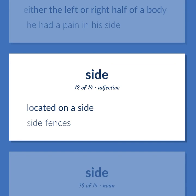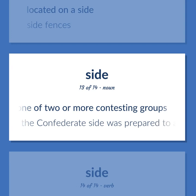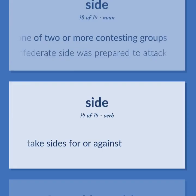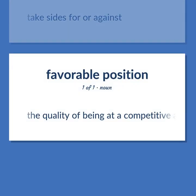SIDE: Located on a side — side fences. One of two or more contesting groups — 'The confederate side was prepared to attack.' Take sides for or against. The quality of being at a competitive advantage. Become our student and get access to effective and free educational materials. Subscribe to our YouTube channel to become a part of our growing YouTube community and to learn English effectively.